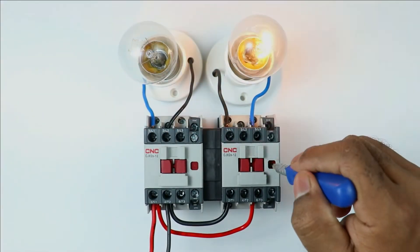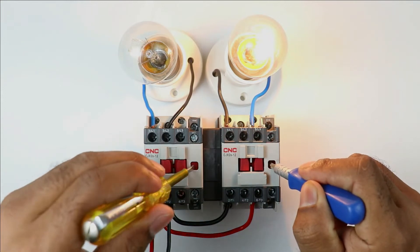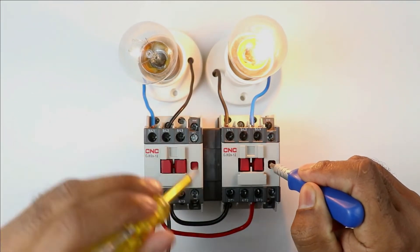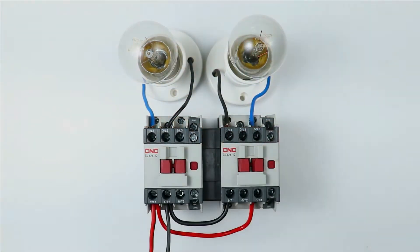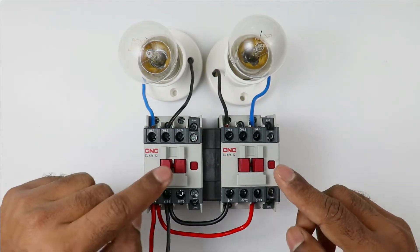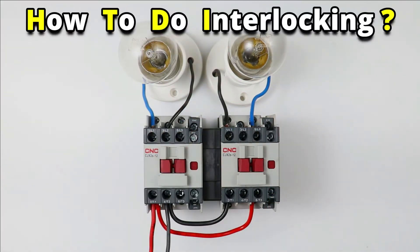Or if I turn on this contactor and try to turn on the other one, then it also won't get turned on. So you can say that these contactors are interlocked. How interlocking can be done, let's understand.